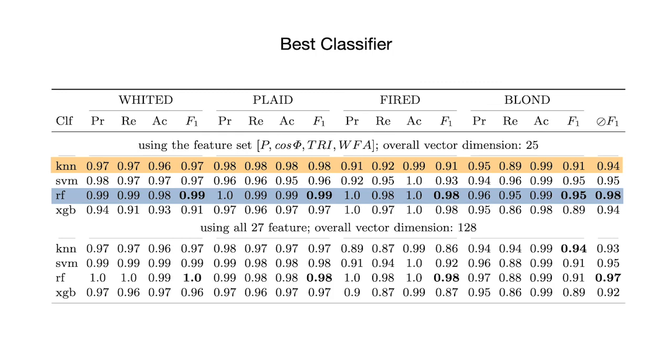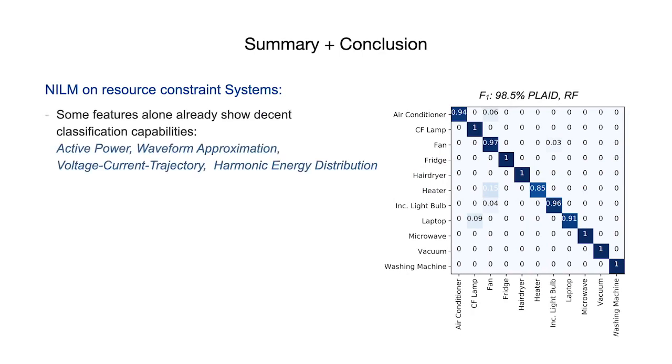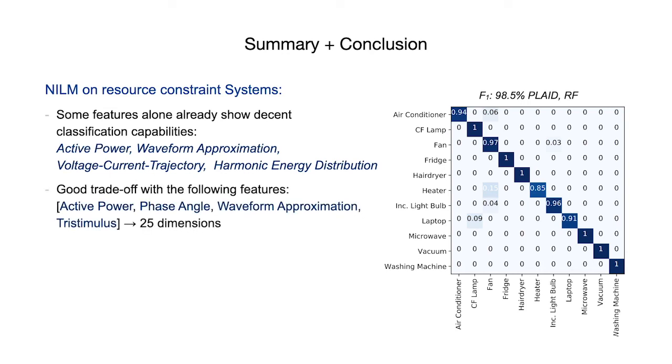So let's summarize what we have seen for non-intrusive load monitoring on resource-constrained systems. We have seen that some features alone already show decent classification scores, like active power or waveform approximation for instance. However, these results can massively be improved using a combination of features. And we found that this set, encompassing active power, phase angle, waveform approximation, and tri-stimulus with just 24 dimensions gives almost perfect results, which you can also see from this confusion matrix on the right. And lastly, we identified random forest as the best classifier and k-nearest neighbors as the best classifier if every single computation matters. Thank you for your attention!